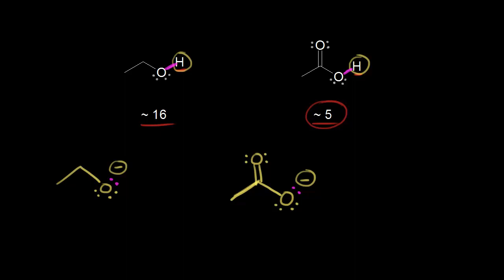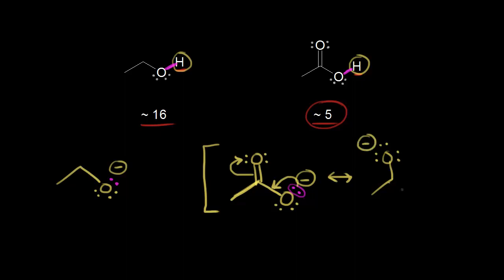For the conjugate base on the right, we can take those electrons in magenta, we can take these electrons here, and we can move them in. Then we can kick off these electrons onto the top oxygen. So let's draw the resulting resonance structure. For our top oxygen, we would now have three lone pairs of electrons around the top oxygen, giving that top oxygen a negative one formal charge. This oxygen would now have only two lone pairs of electrons, and the electrons in magenta moved into here. These pi electrons — let me make them blue — moved off onto the top oxygen to give it a negative one formal charge.